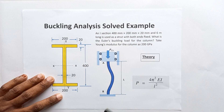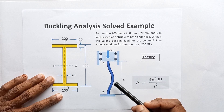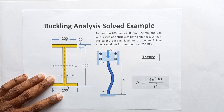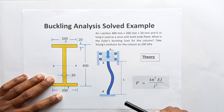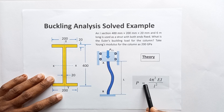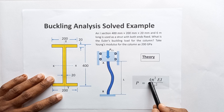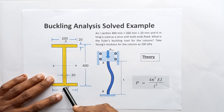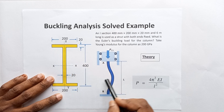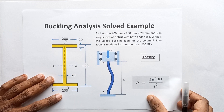For both ends fixed supported, the column will buckle forming this kind of curvature. In this situation the Euler buckling load equation is P = 4π²EI / L². This is the cross-section of the column given — let me work through the cross-section first.